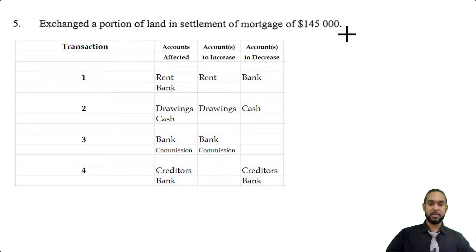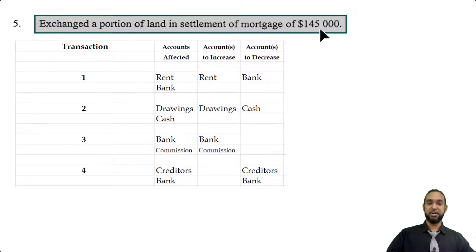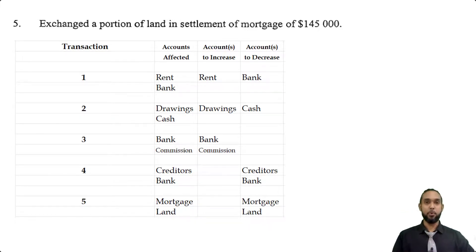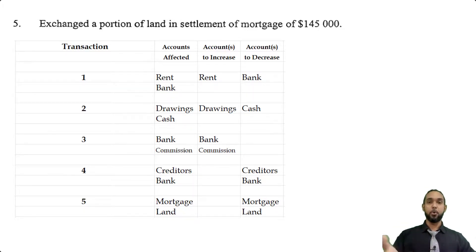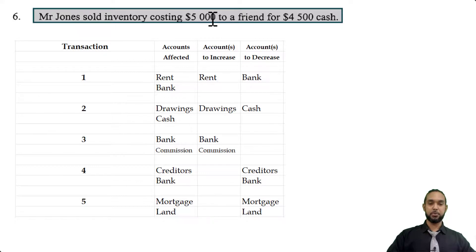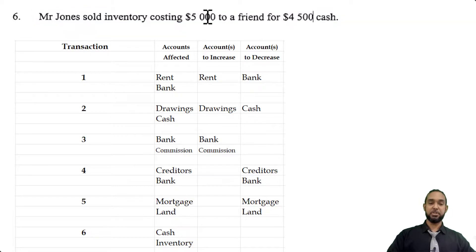Transaction five: exchanged a portion of land in settlement of mortgage $145,000. Land and mortgage are both affected and both are decreasing — land decreases because we're giving it away, and mortgage decreases because we're using the land to pay it off. Transaction six: Mr. Jones sold inventory costing $5,000 to a friend for $4,500 in cash. Cash increases and inventory decreases.